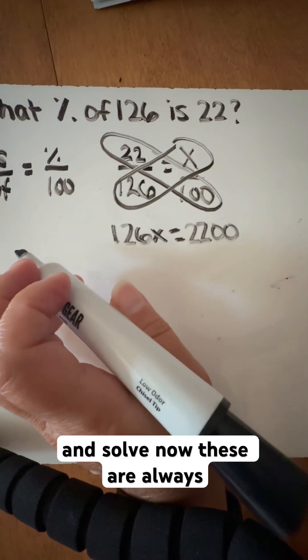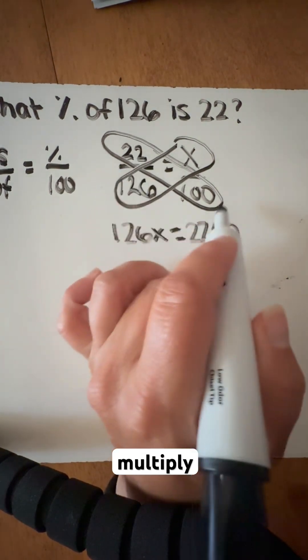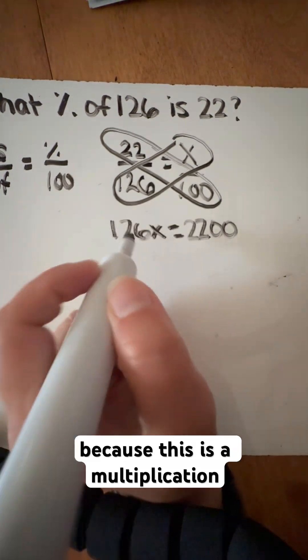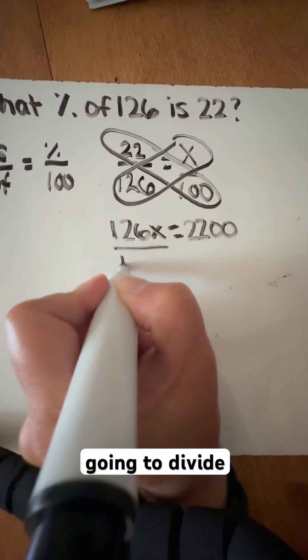We're going to go ahead and solve. Now these are always going to be the same types of things. Multiply, multiply, set them equal, and then divide because this is a multiplication. We're going to divide.